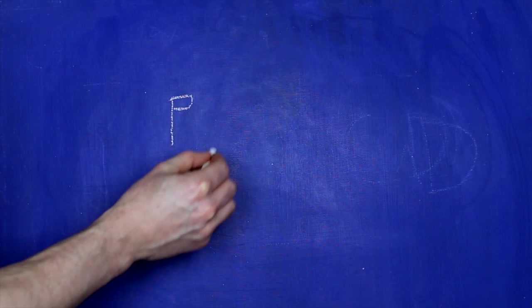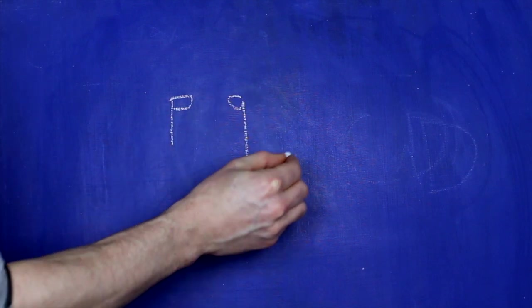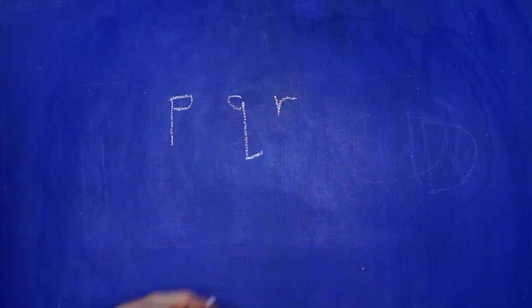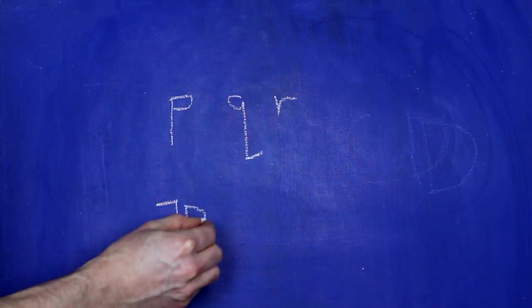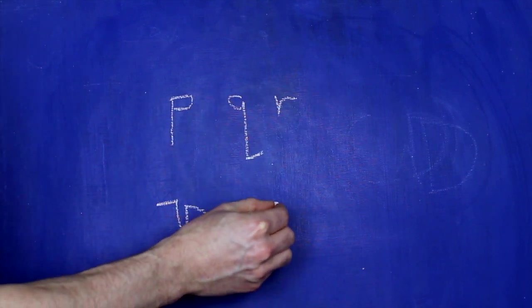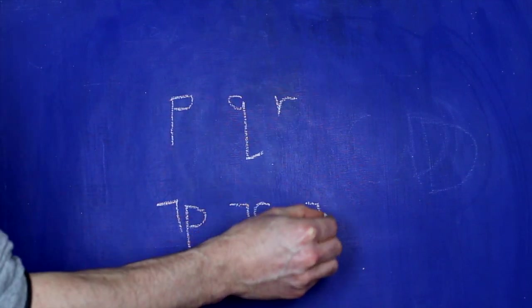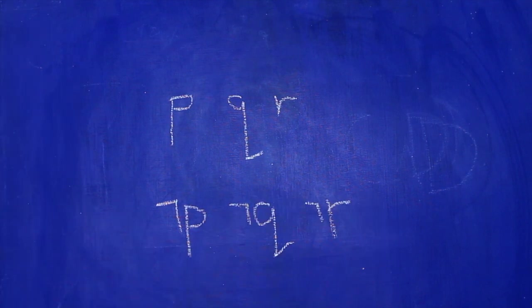A literal is either a primitive sentence or a primitive sentence with one negation in front of it. So p, q, r, not p, not q, not r — these are all literals.